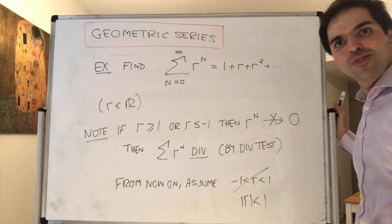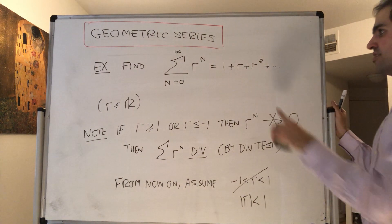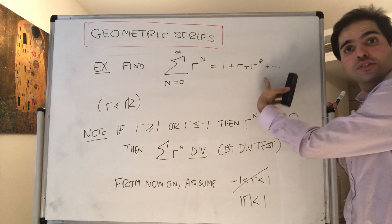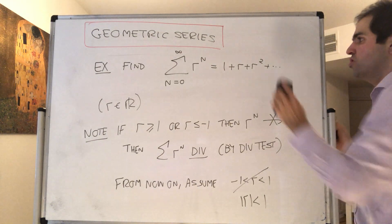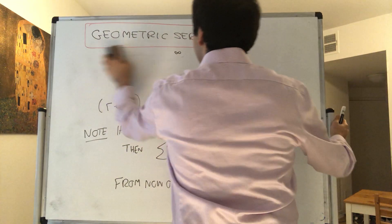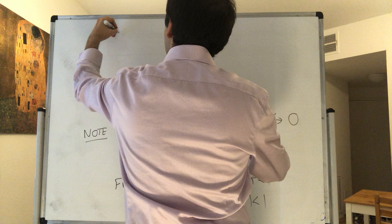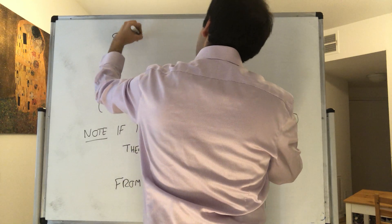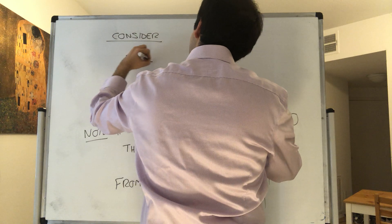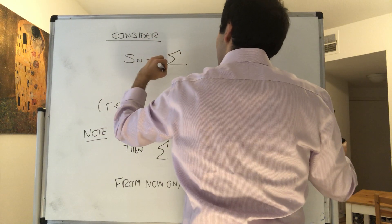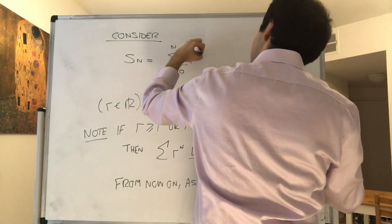All right, and now with this convergent weirdness out of our way, let's calculate the value of the sum. But remember, how do you calculate a series? You have to find the partial sums. So consider S_n to be the sum from k from 0 to n of r to the k.